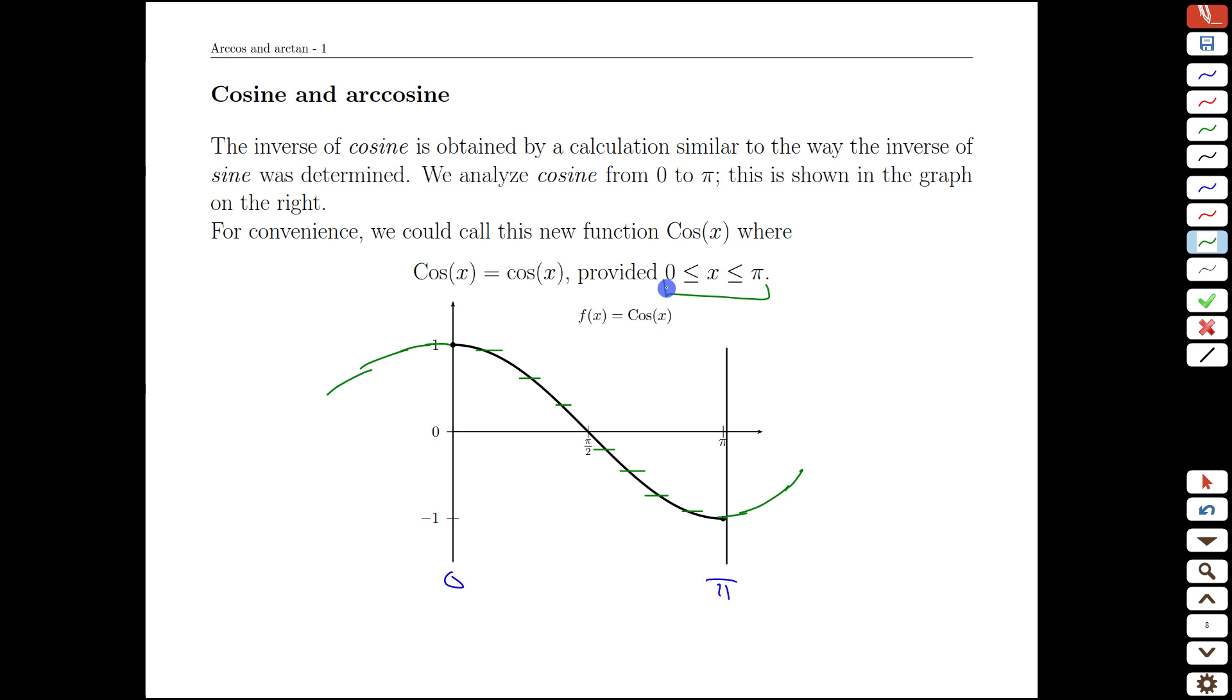Notice it's a bit awkward in the sense that this interval is not the same interval as we had for the sine function. That was negative pi over 2 to pi over 2. It's just the nature of these graphs. Where is a stretch closest to 0, because we like that, where the function is invertible?